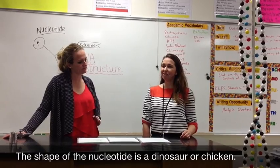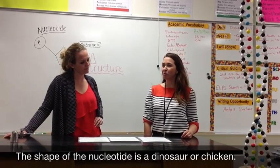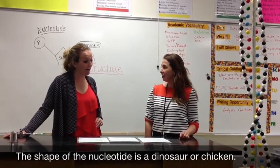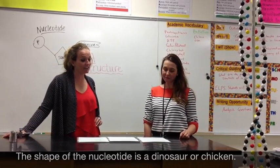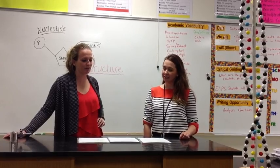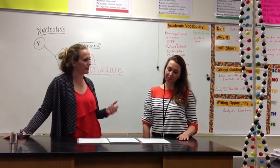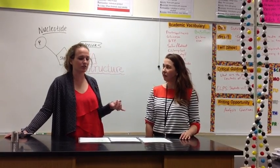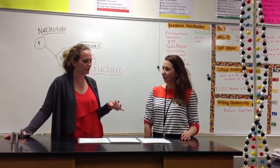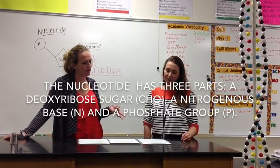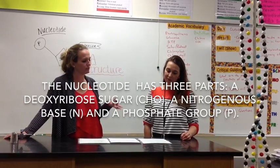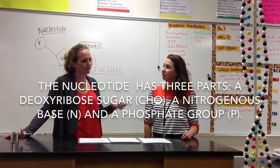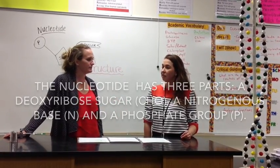Doesn't it look like a dinosaur or maybe a chicken? A nucleotide is a complex monomer that includes the sugar deoxyribose, which is made up of carbon, hydrogen, and oxygen, a nitrogenous base made of nitrogen, and a phosphate group containing phosphorus.